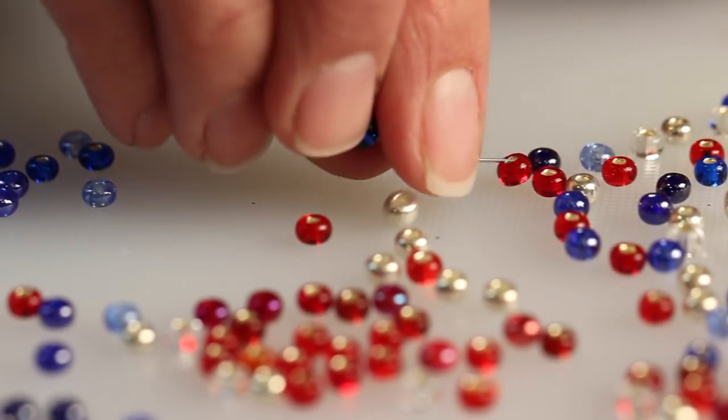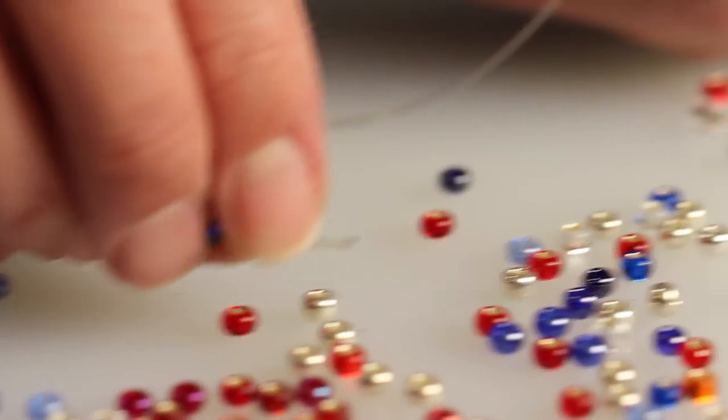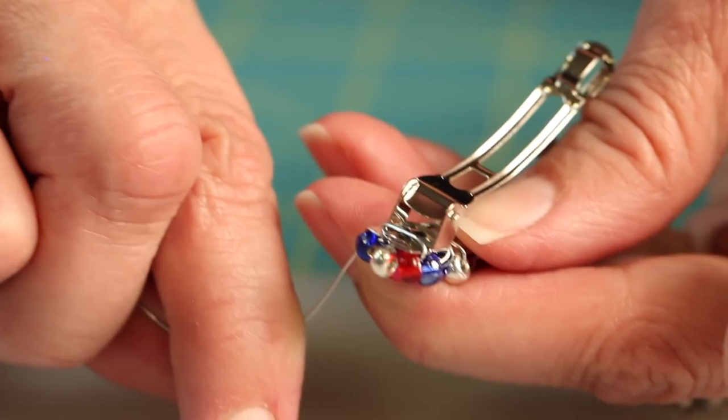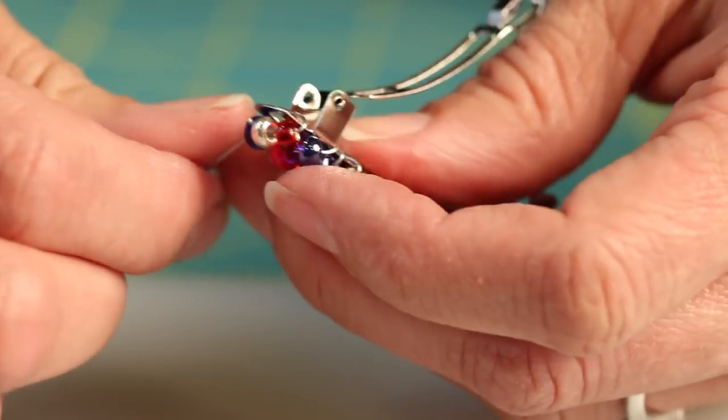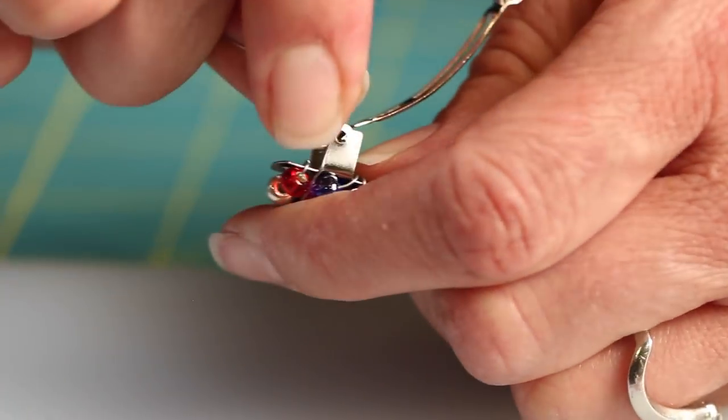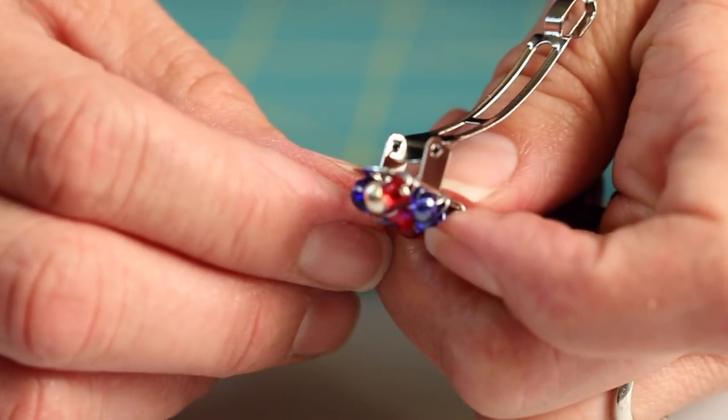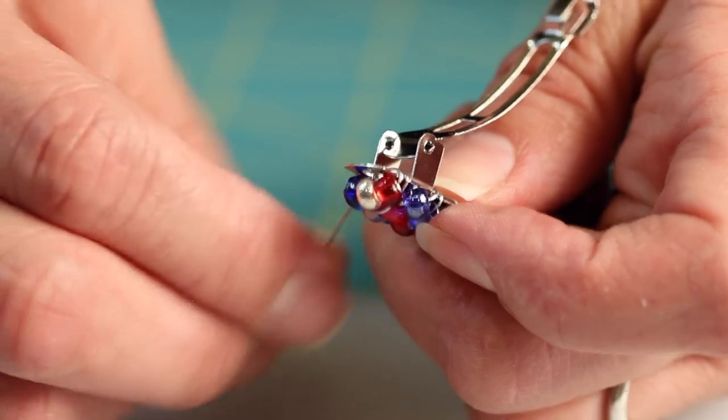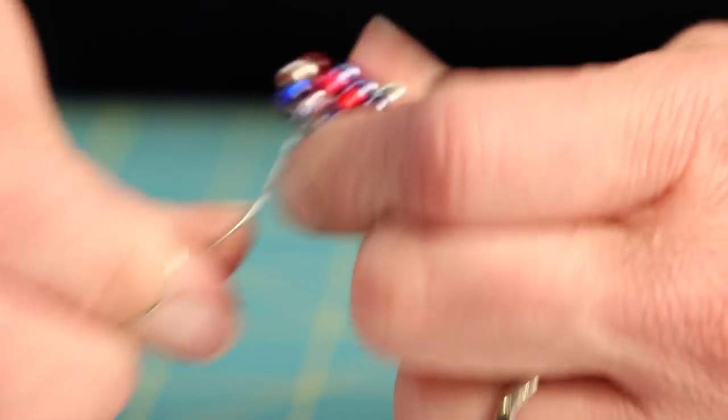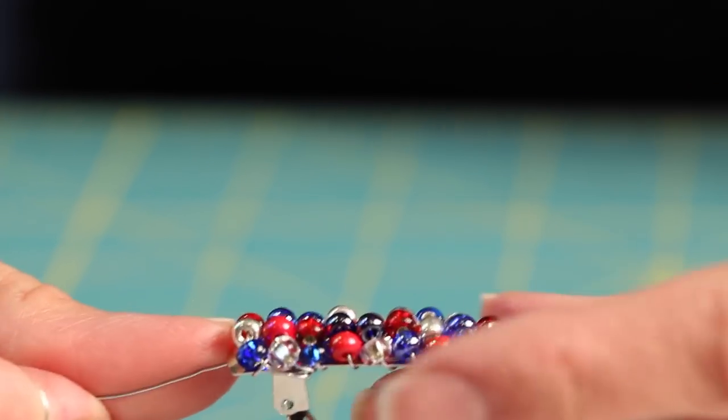When you get to the end of the clip, you'll want to wrap your last row of beads around the outside part of the clip. So once again, moving from the inside part of the prong to the outside part of the prong. Lay on your last row and then wrap your wire around one last time, tightly securing it into place.